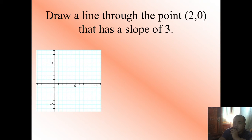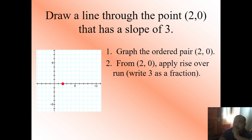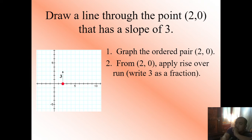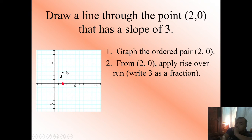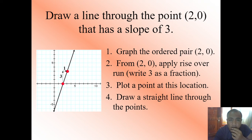Draw a line through the point (2, 0) that has a slope of 3. First, plot the ordered pair (2, 0) on the graph. Then from (2, 0), apply rise over run — write 3 as a fraction: 3/1. That means rise is 3 and run is 1, since 3 divided by 1 is still 3. Since the slope is positive, go to the right direction: move 1 unit to the right and 3 units up from the present point. Plot this new point, then connect the points by drawing a straight line through them. This is the line through the point (2, 0) with a slope of 3.